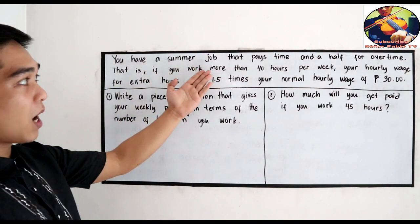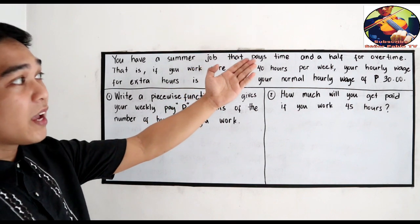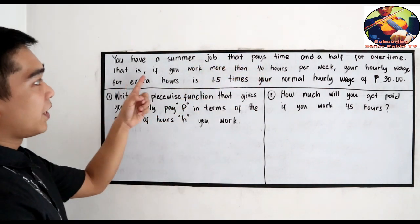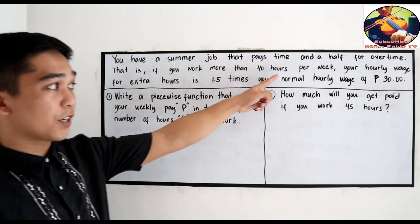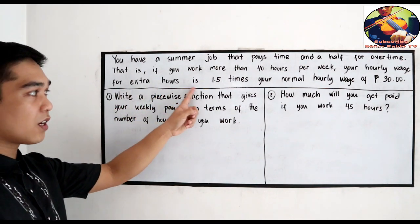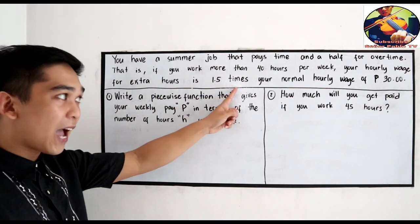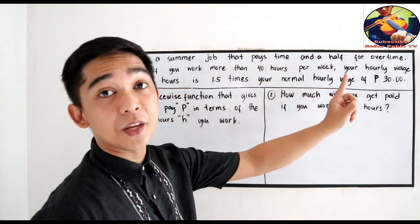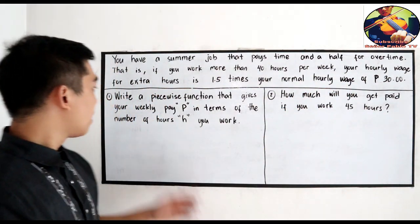You have a summer job that pays time and a half for overtime. That is, if you work more than 40 hours per week, your hourly wage for extra hours is 1.5 times your normal hourly wage of 30 pesos.